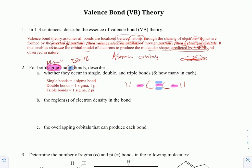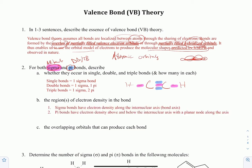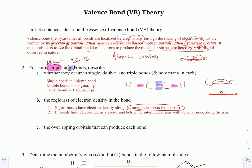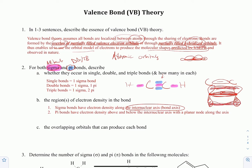Sigma bonds have their electron density right on the internuclear axis — the line connecting the two nuclei. The electron density for a sigma bond is always in that area between the two nuclei.